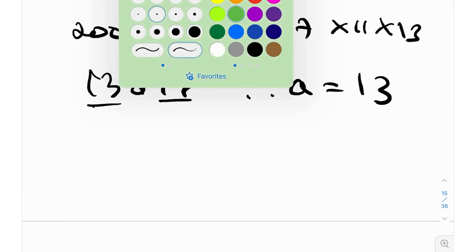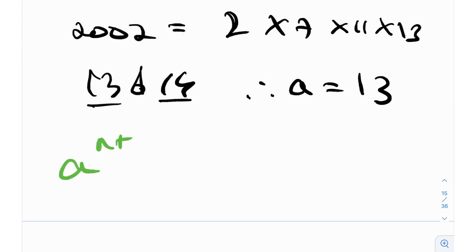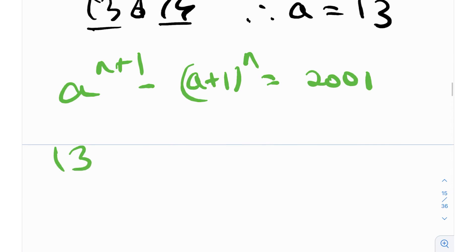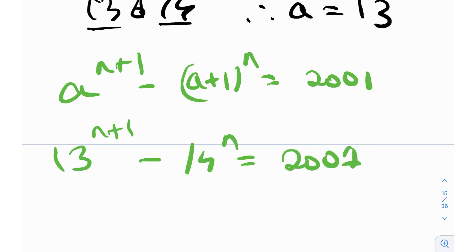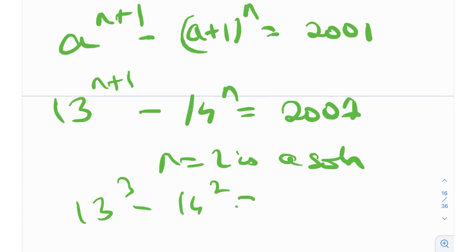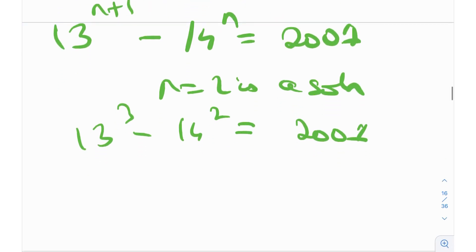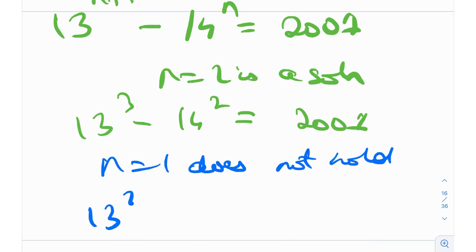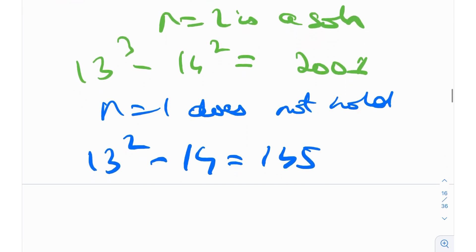Now substituting A = 13, the equation becomes 13^(N+1) − 14^N = 2001. Playing around, N = 2 works because 13³ − 14² = 2197 − 196 = 2001. We can verify N = 1 does not work: 13² − 14 = 169 − 14 = 155, nowhere close to 2001.